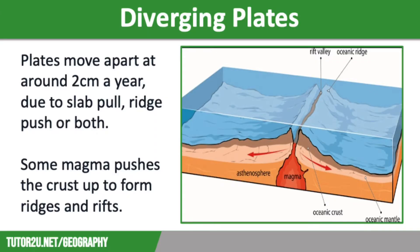At Constructive Plate Margins, tectonic plates move away from each other, usually at around 2cm a year. They are also known as divergent margins. Tectonic plates move apart due to slab-pull, ridge-push, or a combination of the two.